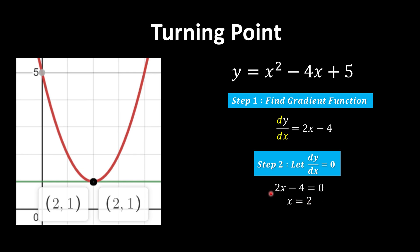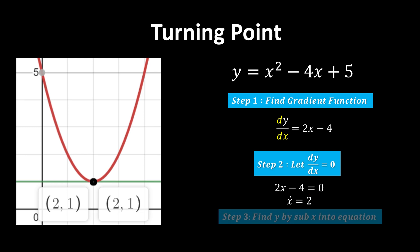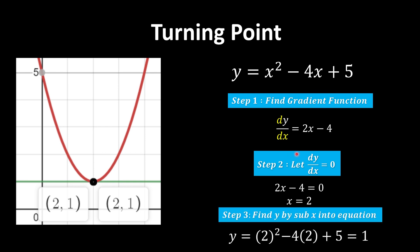Since a turning point must be expressed in coordinate form, we need both x and y. We only have the x-coordinate so far, so we substitute x back into the equation to find y. We get 2 squared minus 4 times 2 plus 5, which gives 1. So the turning point is (2, 1).